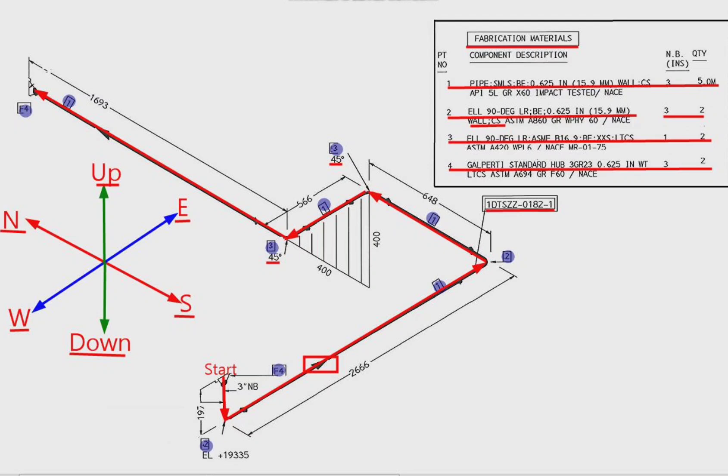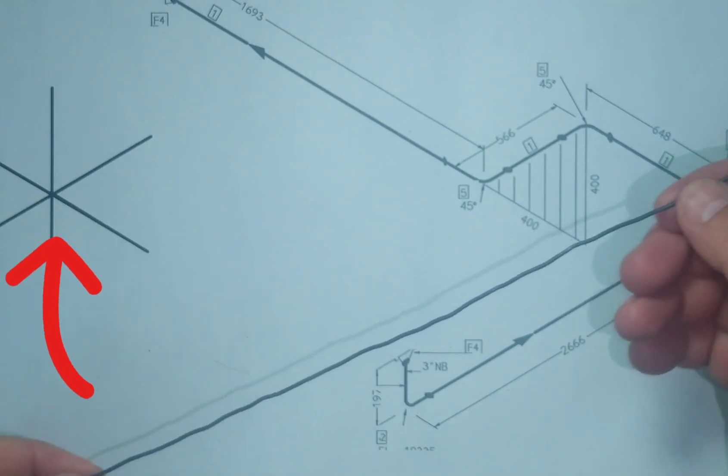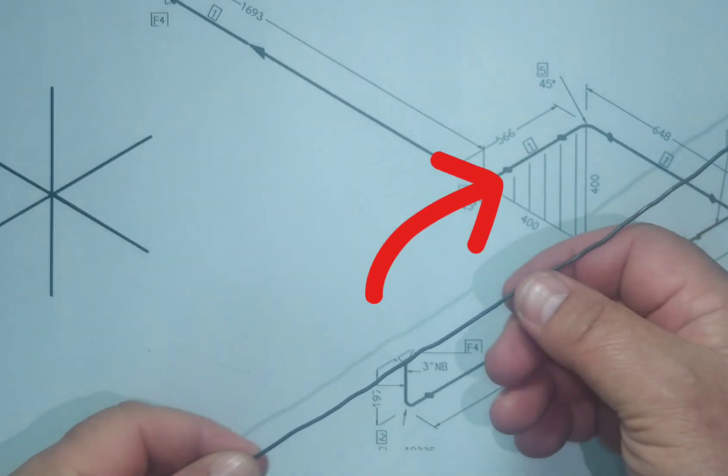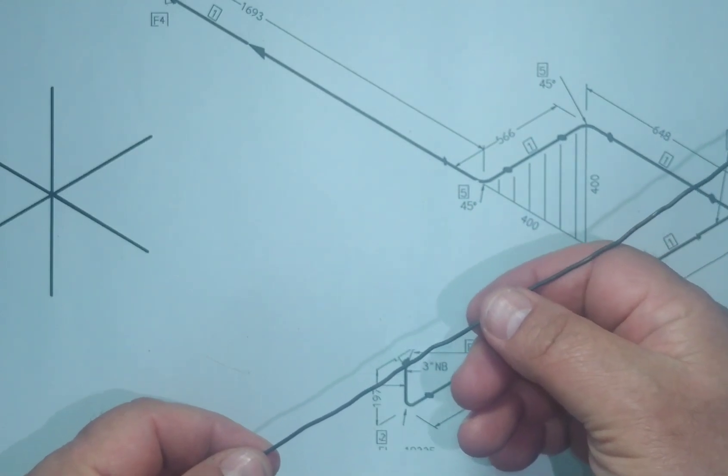Now let's bend the wire according to the rule we learned. This is our wire, the sketch showing these directions, this is the pipe isometric drawing. With the help of this sketch, let's bend the wire of the pipeline.